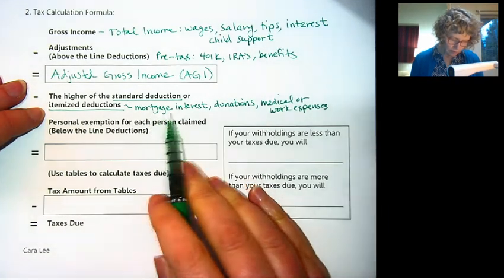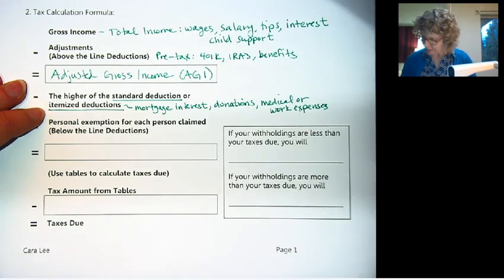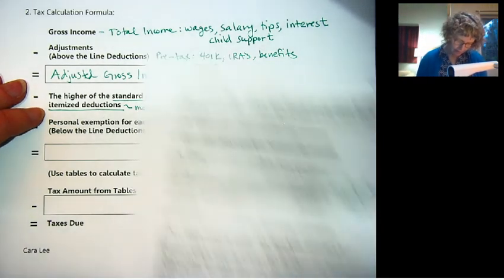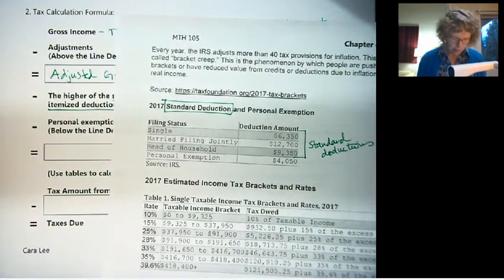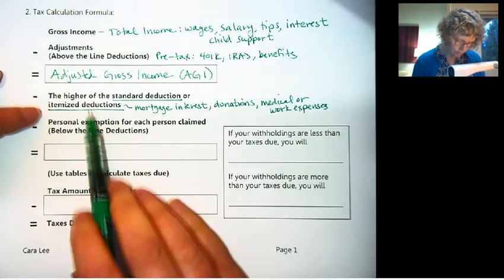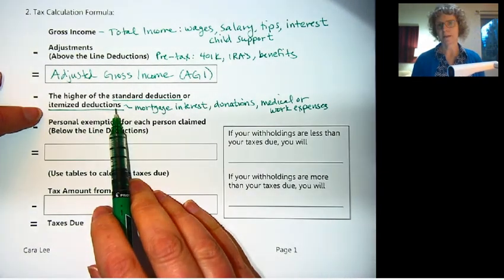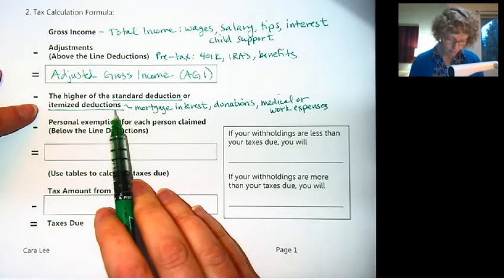But those are the types of things that would add up to your itemized deduction. So you want to get, usually people want to get as much of these as they can, and see if it adds up to higher than the standard deduction. If so, then they can claim the itemized deductions. So you want whichever is higher, either the standard deduction or your own itemized deductions. So you're going to subtract that off your AGI.